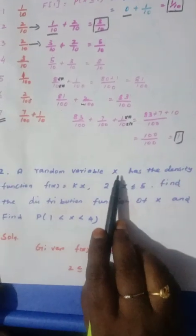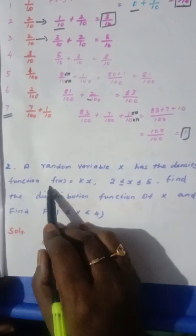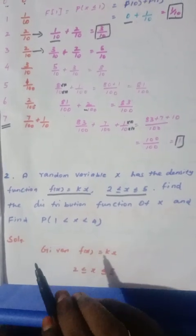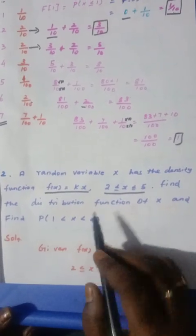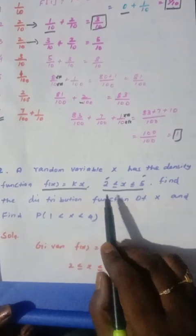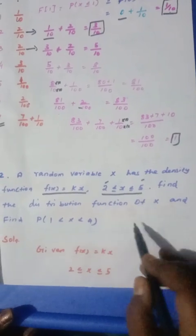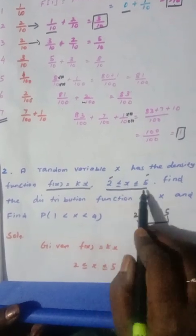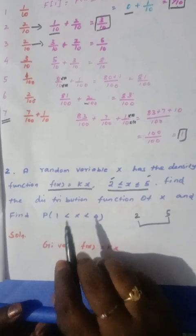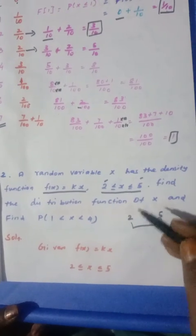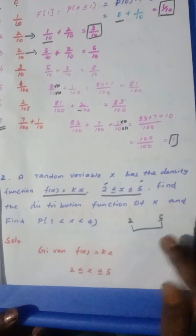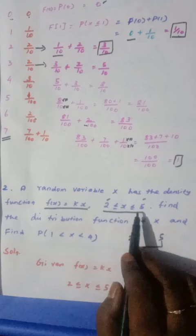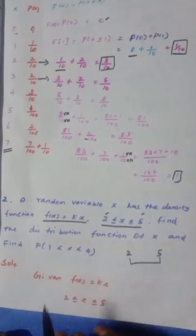Now x has a density function — this is a continuous case. For a continuous variable, we deal with a particular interval, say 2 to 5. In a discrete case you list individual values like 2, 3, 4, and 5, but for the interval 2 to 5 this is the continuous case. We look at the distribution function and first find the K value.